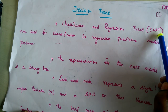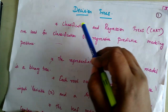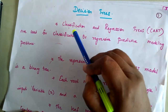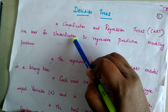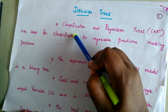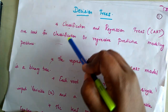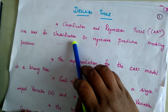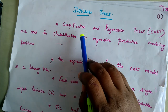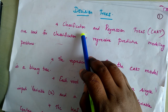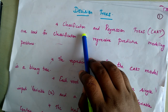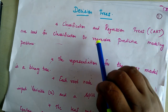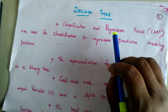CART stands for Classification and Regression Tree. Classification is when we have a group of data and we classify them into predefined classes — for example, classifying images as rat or elephant images, a binary outcome of zero or one. Those tasks are called classification tasks.